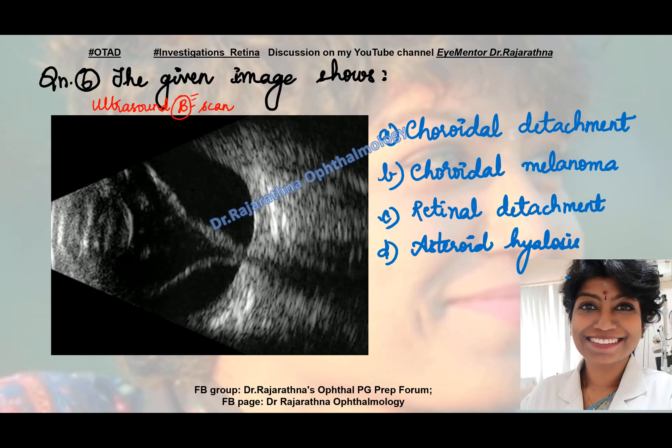What does B stand for? B stands for brightness. With B-scan, you will be able to see the posterior segment, but you will not be able to see much detail of the anterior segment.